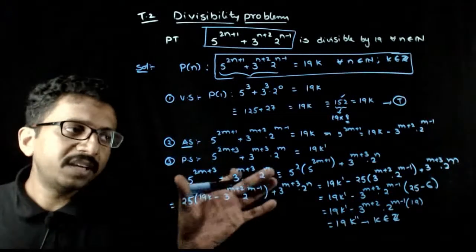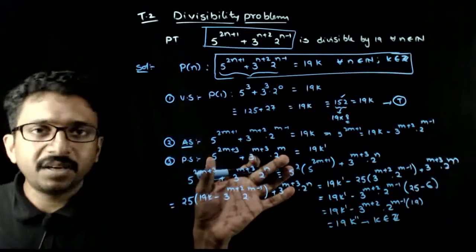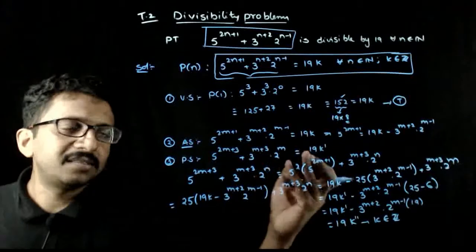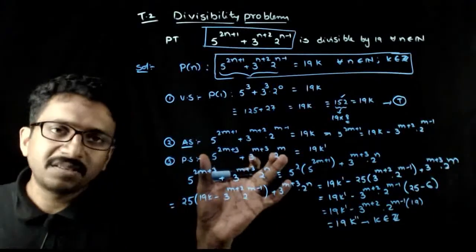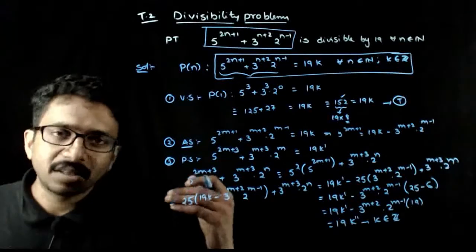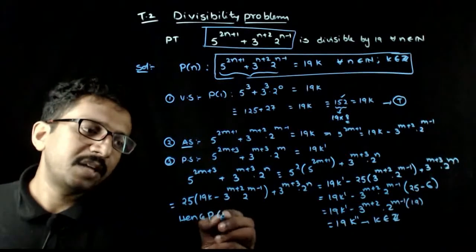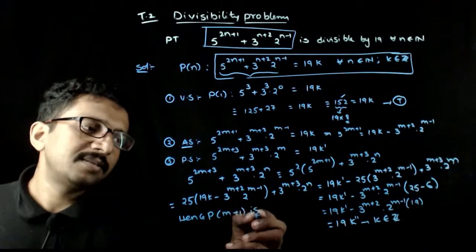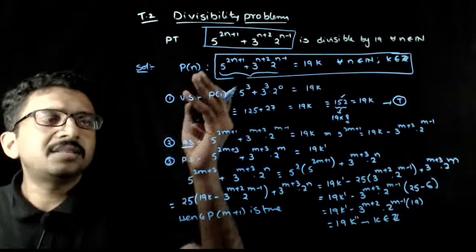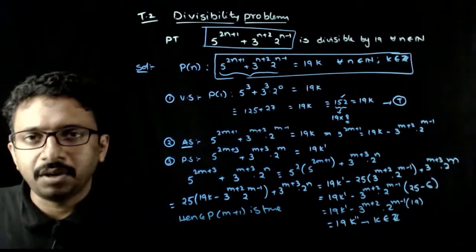We have proved that 5^(2m+3) + 3^(m+3) · 2^m is also 19 times some integer, meaning this number is divisible by 19. Hence P(m+1) is true. By the principle of mathematical induction, this statement is true for all n belonging to natural numbers.